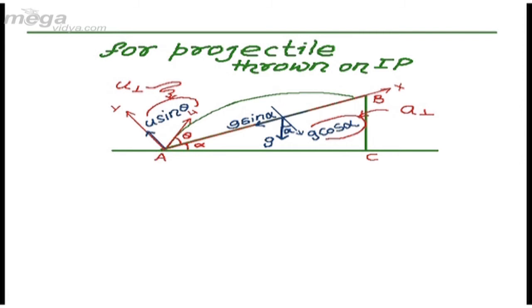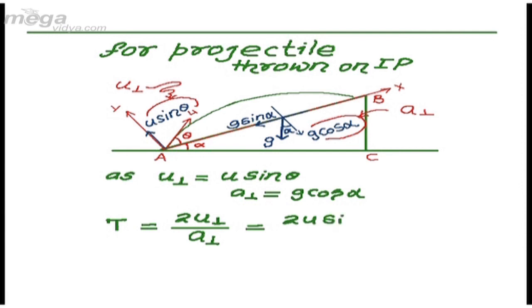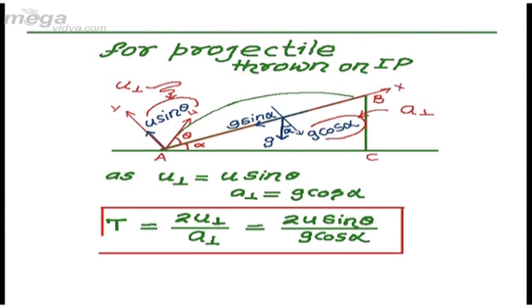So by taking u perpendicular equal to u sin theta and a perpendicular to be g cos alpha, time of flight of this projectile on inclined plane can be written as T equals 2 times u perpendicular divided by a perpendicular, which gives us 2u sin theta divided by g cos alpha. This is the time of flight for this projectile on this inclined plane.